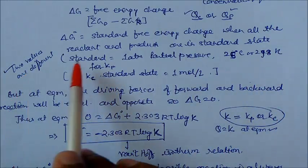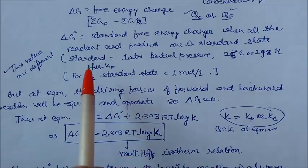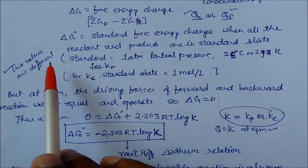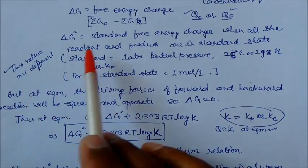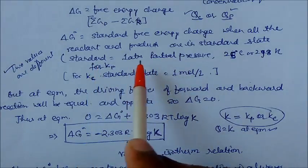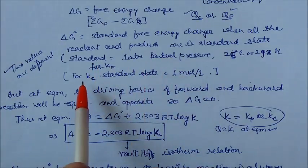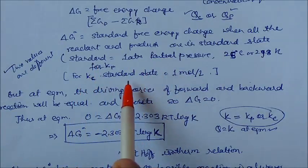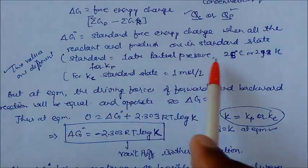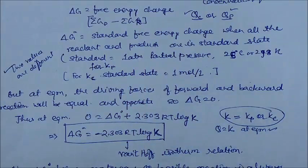These two values — for pressure and for concentration — are different. In terms of pressure, the standard state is for Kp. In terms of concentration, Kc is expressed in one mole per liter.